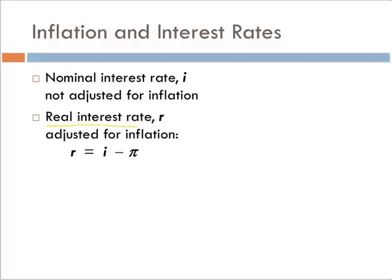So we want to take that into account, and we have this equation called the Fisher equation: the real interest rate roughly equals the nominal interest rate minus the inflation rate. Intuitively, the real interest rate equals the nominal interest rate — that's how much the nominal overall value of your investment or the money put into this is growing.